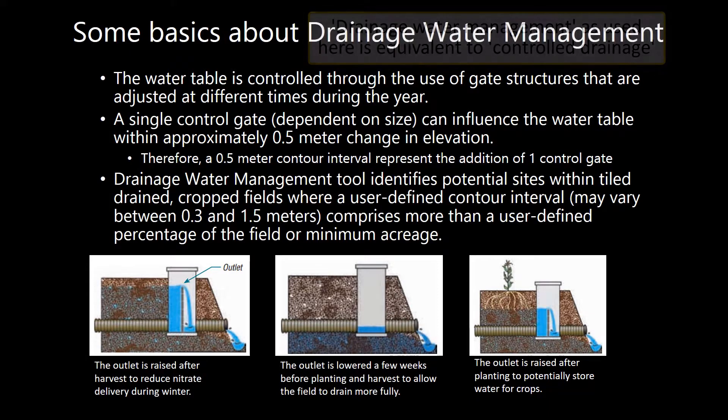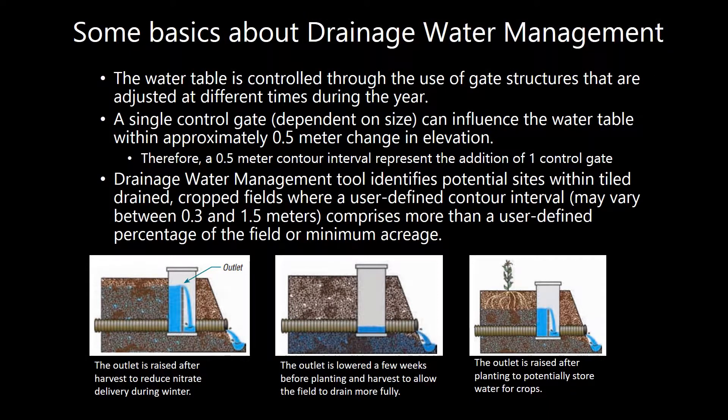The drainage water management practice adjusts the water table at certain times of the year via control gate. So for example, if field access is necessary, say for harvest, the gate can be open to allow unrestricted drainage.